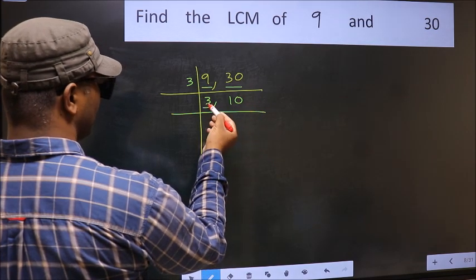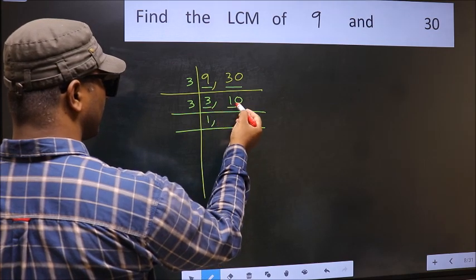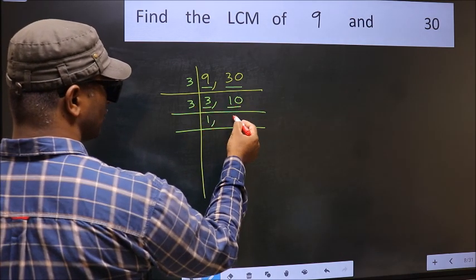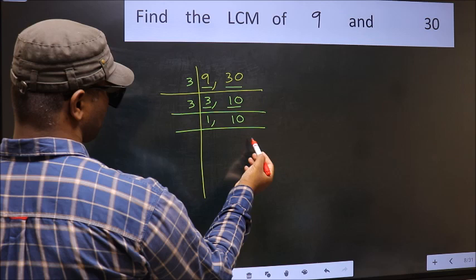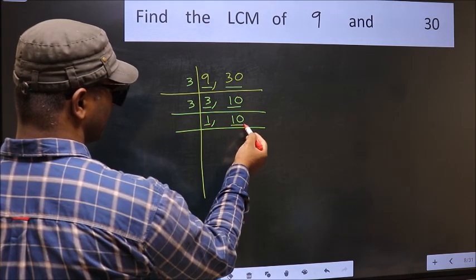Now here we have 3. 3 is a prime number, so 3 times 1 is 3. The other number 10 is not divisible by 3, so you write it down as it is. Now we got 1 here, so focus on the next number 10.